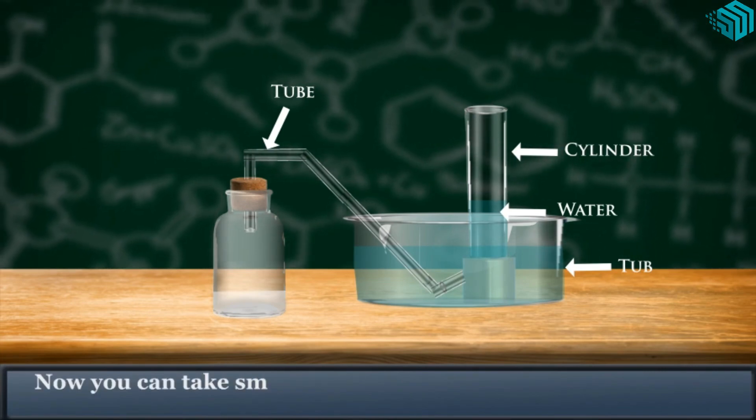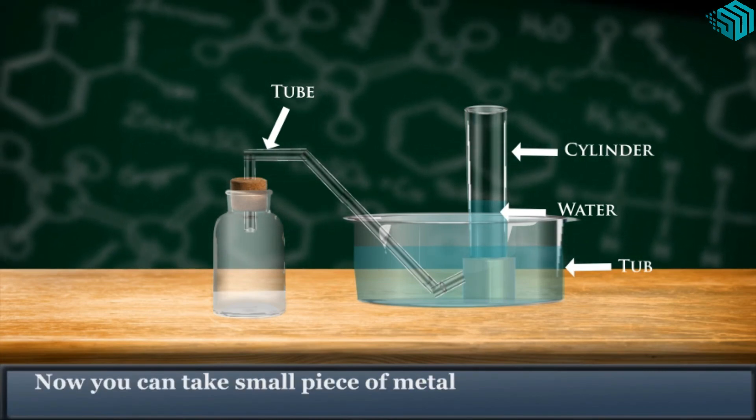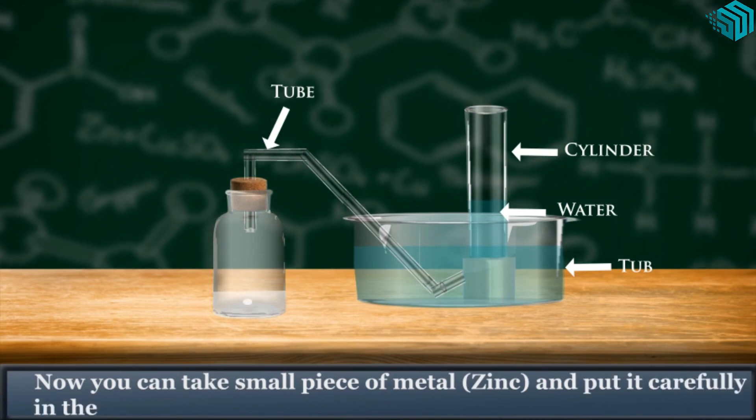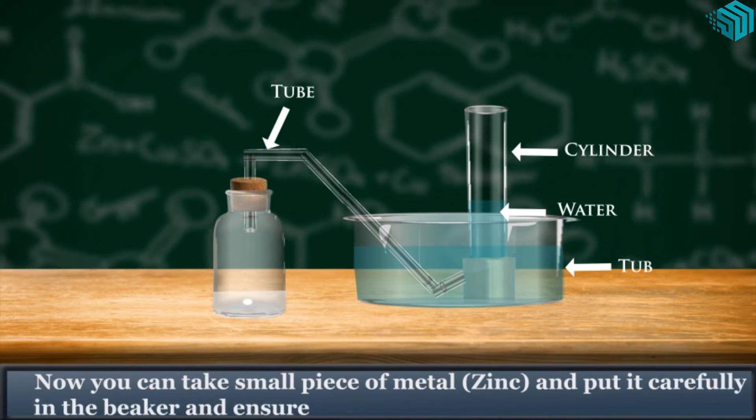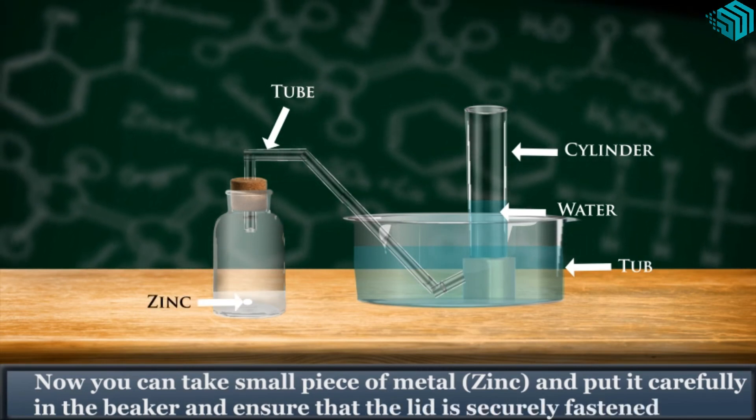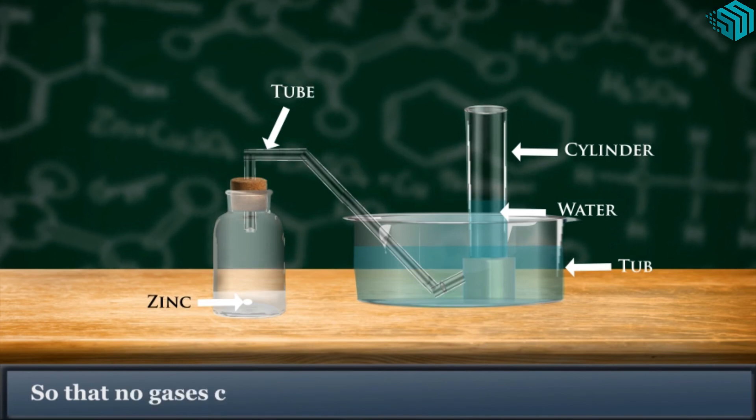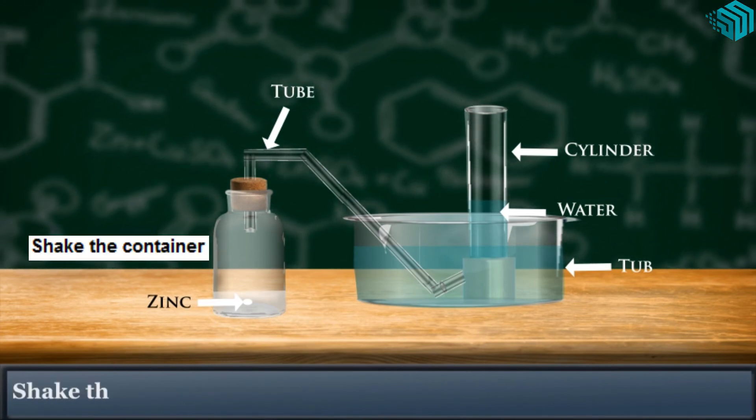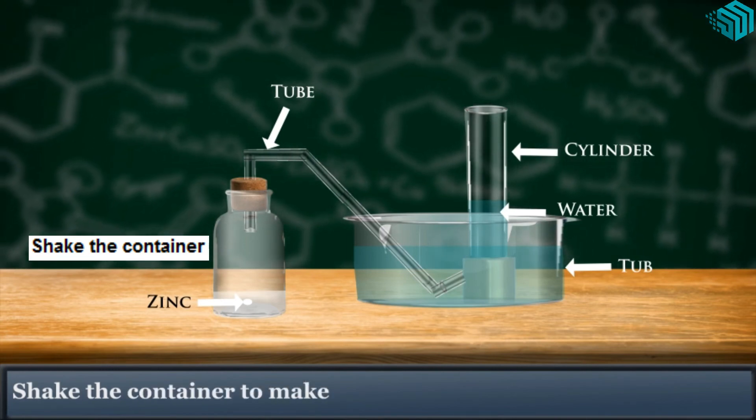Now you can take a small piece of metal, which would be zinc, and put it carefully in the beaker and ensure that the lid is securely fastened so that no gases can escape. Shake the container to make the reaction take place more quickly.